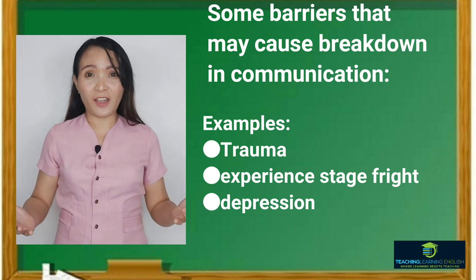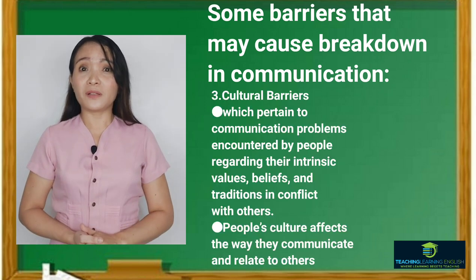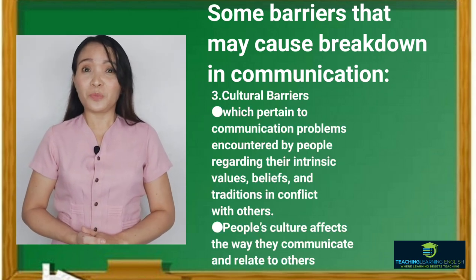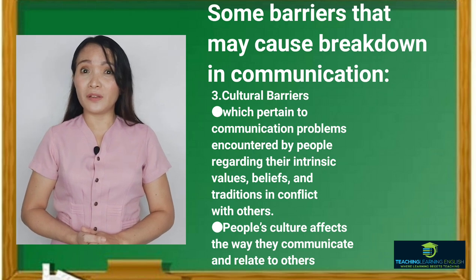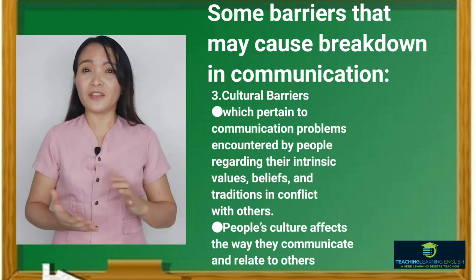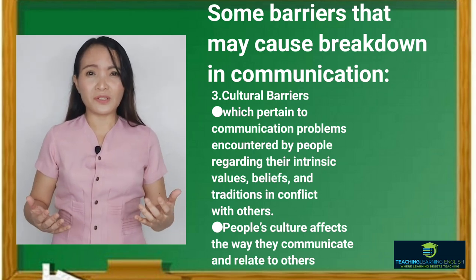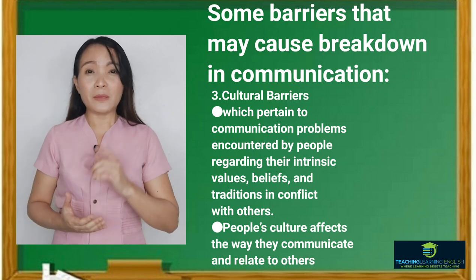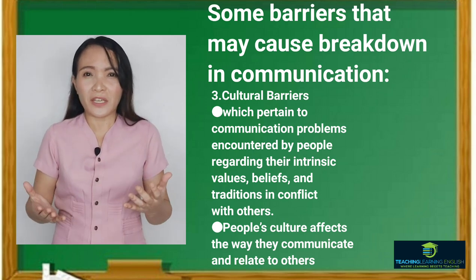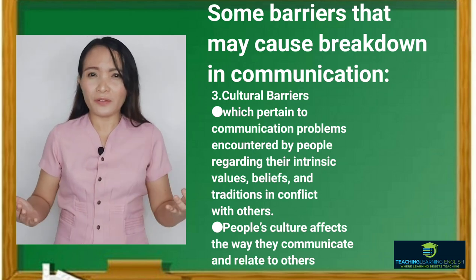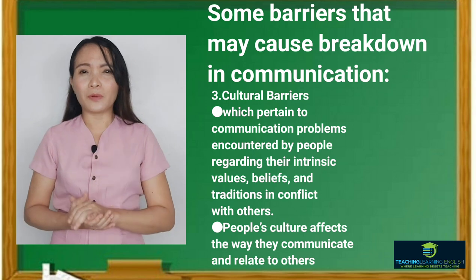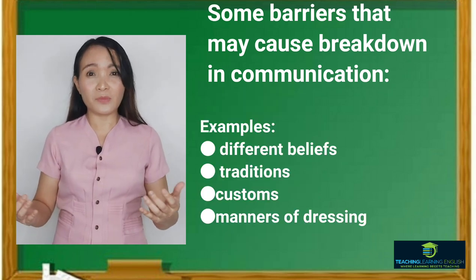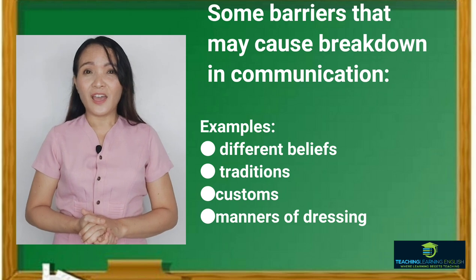The third is cultural barriers, which pertain to communication problems encountered by people regarding their intrinsic values, beliefs, and traditions that conflict with others. People's culture affects the way they communicate and relate to others. Examples include different beliefs, traditions and customs, and manners of dressing.